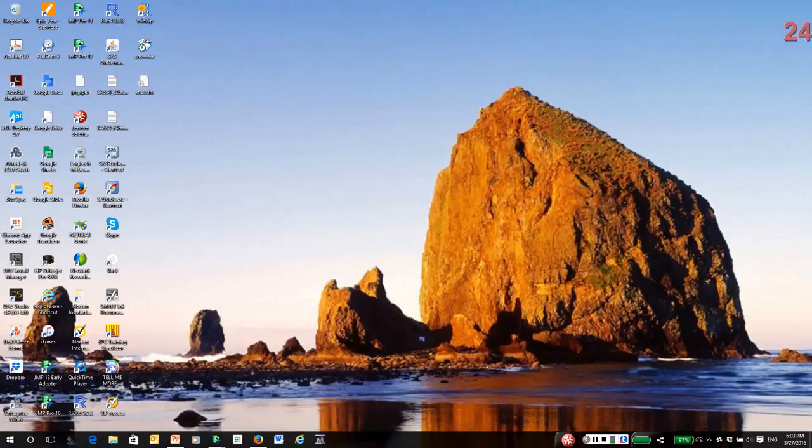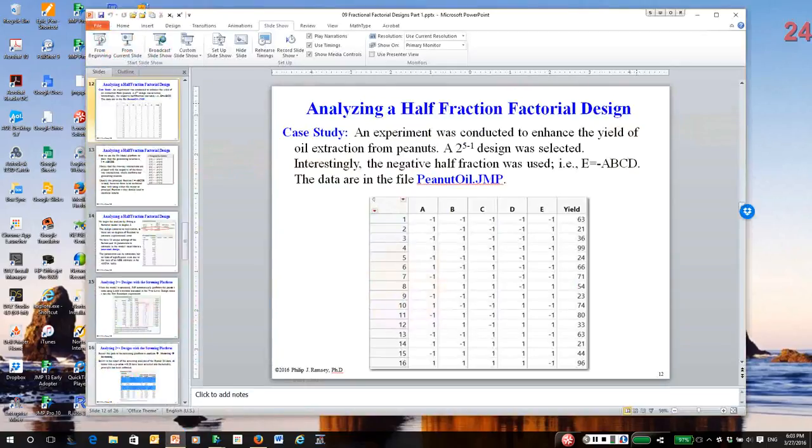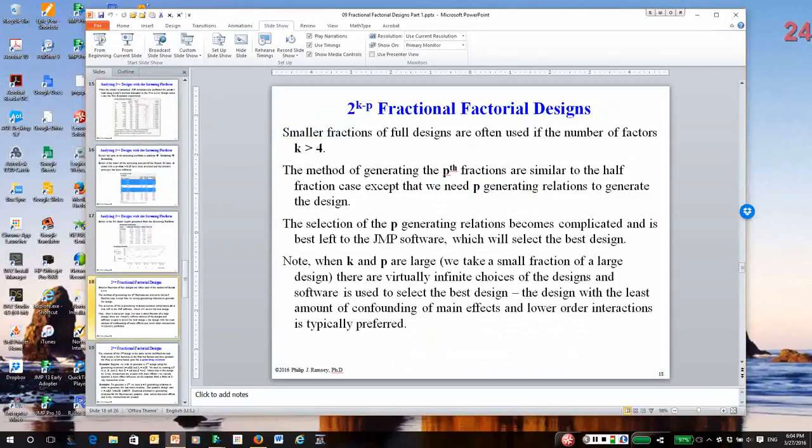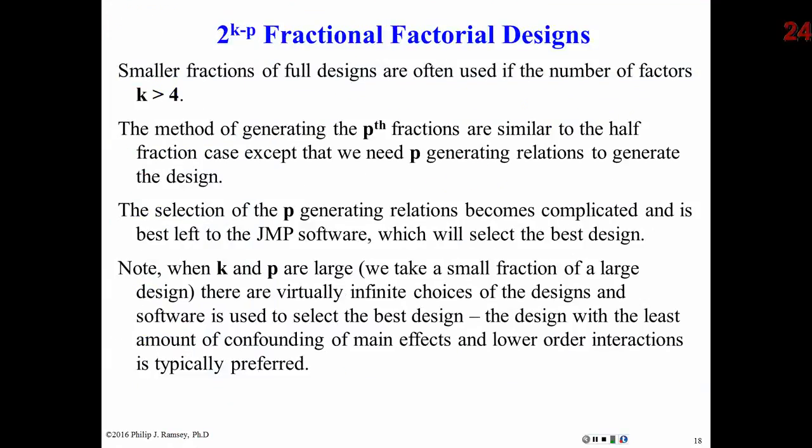So that covers quite a bit of territory in the fractional factorial part one notes. So I'm actually going to jump ahead and talk a little bit about what happens when we take even smaller fractions. So I took a half fraction. But if K is really large, we've got a lot of factors. Quite often we want much smaller than a half fraction. For instance, a 2 to the 6th is 64 runs. And quite often we do a 2 to the 6th minus 2. We often do a quarter fraction. Or a 2 to the 7th is 128 runs. We typically do an eighth fraction.